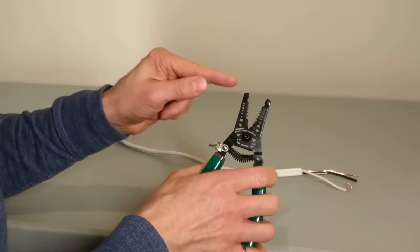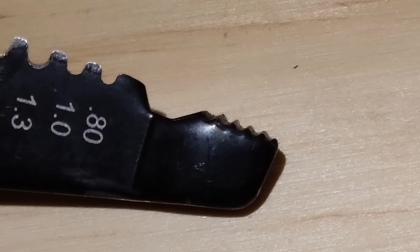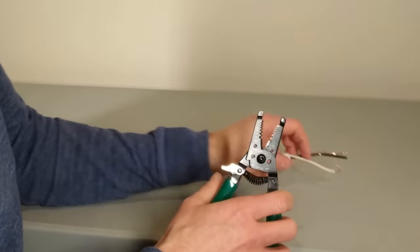Mistake number six is not using the pliers at the nose of the wire stripper. At the nose end of the wire strippers are these plier-like grips, and you can use these in a number of ways.